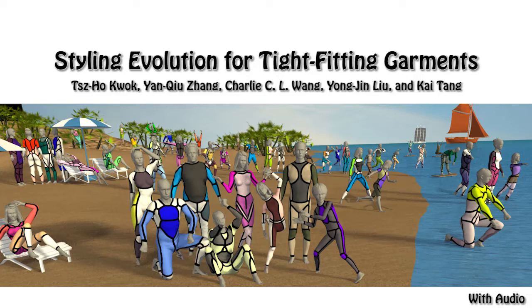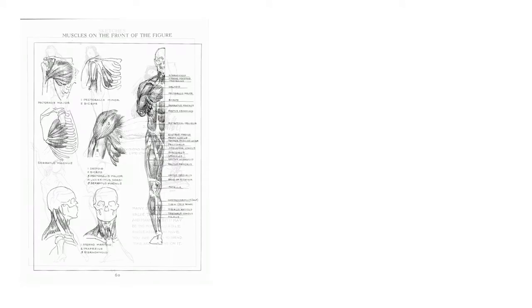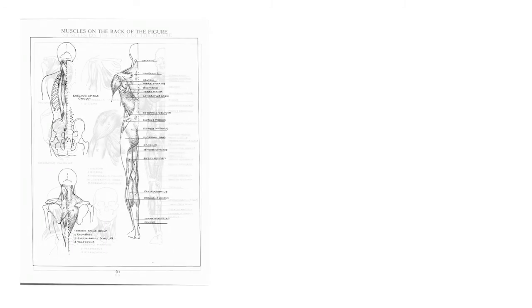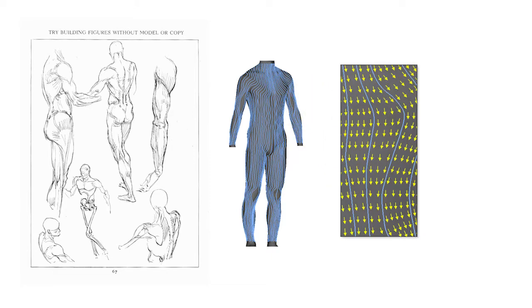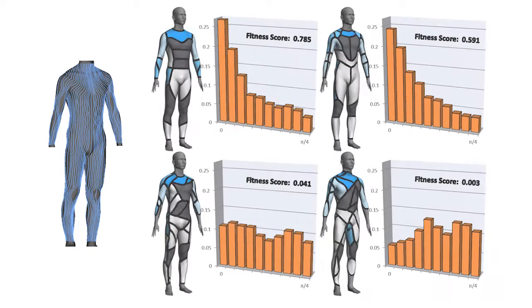In this paper, we present a method for styling evolution of tight-fitting garments. We consider the aesthetics factors in the evolution. Referencing a drawing book, we base on the anatomy study of bones and muscles, and draw the body streamlines on the 3D human bodies. A design looks aesthetic when the styling curves are parallel or perpendicular to the streamlines.